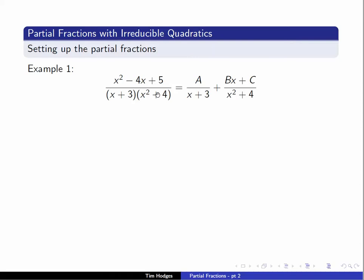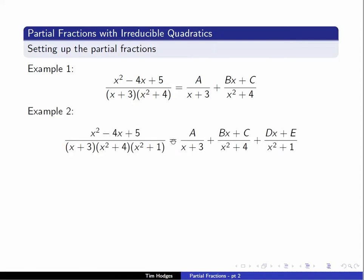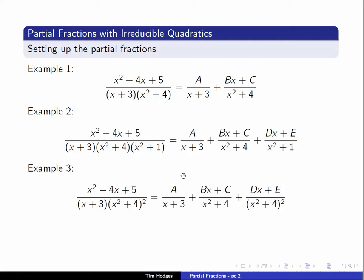For example, if the denominator is (x plus 3)(x squared plus 4)(x squared plus 1) — a linear factor and two irreducible quadratics — then for each irreducible quadratic we have a term like bx plus c over (x squared plus 4) and dx plus e over (x squared plus 1), but it's still just a over (x plus 3) for the linear factor. And if we have a power of an irreducible quadratic, we need a term for each smaller power: both bx plus c over (x squared plus 4) and dx plus e over (x squared plus 4) squared.